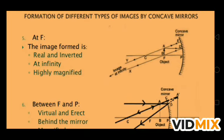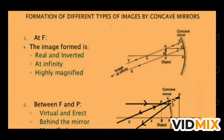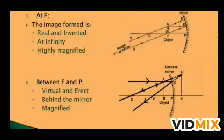Next: formation of image when the object is at focus. Light rays come parallel to the principal axis and pass from the focus; the second comes from C and traces the same line. The image is formed at infinity because both reflected lines are parallel. The image is real, inverted, at infinity, and highly magnified — it becomes much bigger than the object.